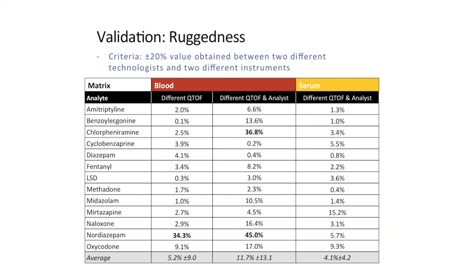In terms of validating the ruggedness of the method, with a validation criteria of plus or minus 20%, this was established by comparing the concentration measured using standard addition and the QTOF between two different analysts and two different instruments, both in blood and serum. I had a blood sample which I quantitated, ran on one QTOF, and then switched the samples to another QTOF to compare the concentration.